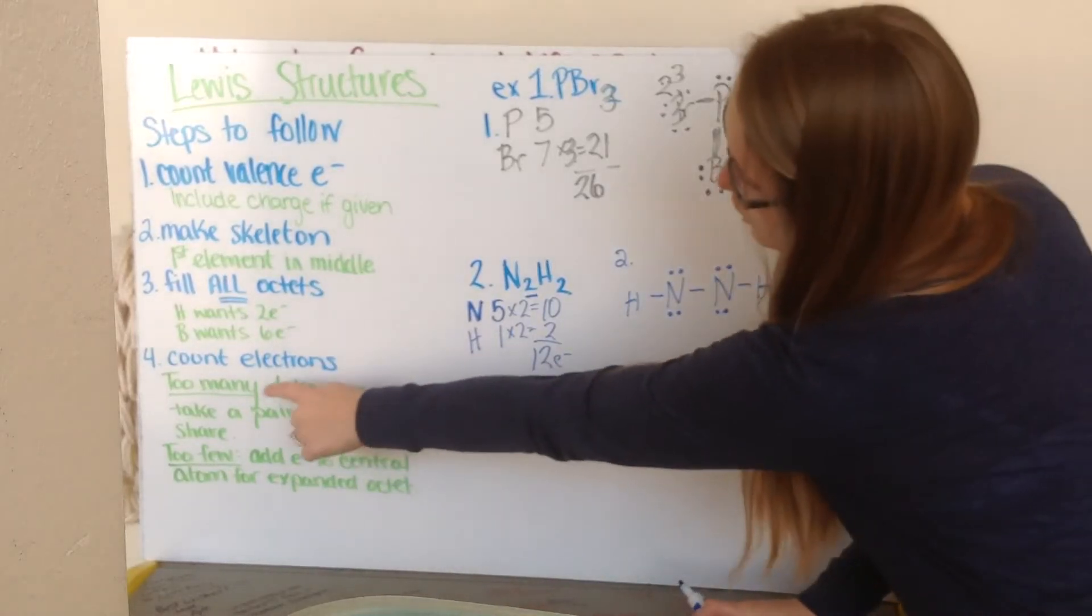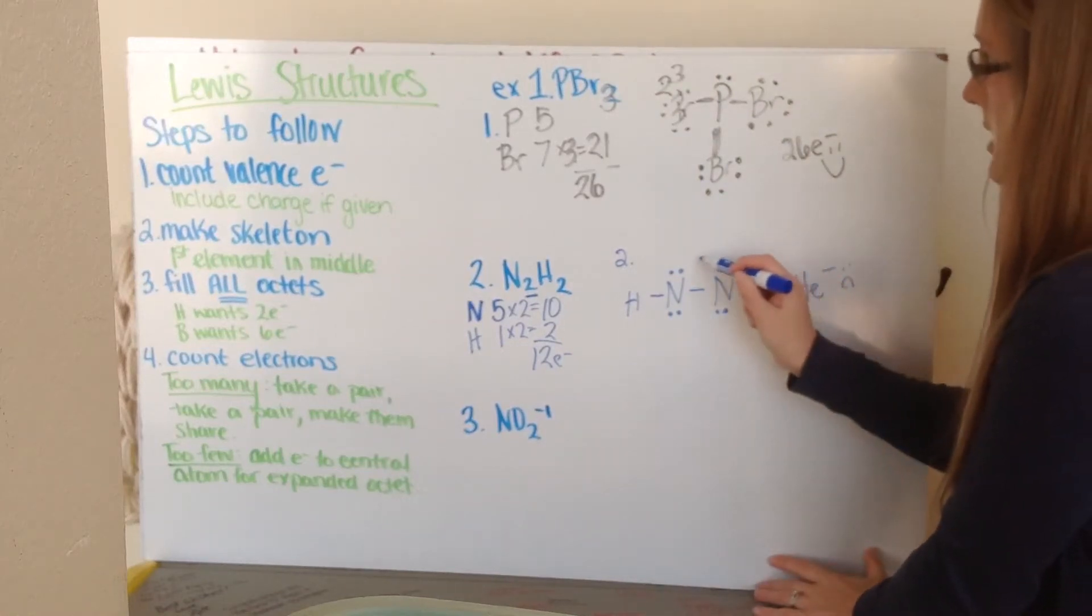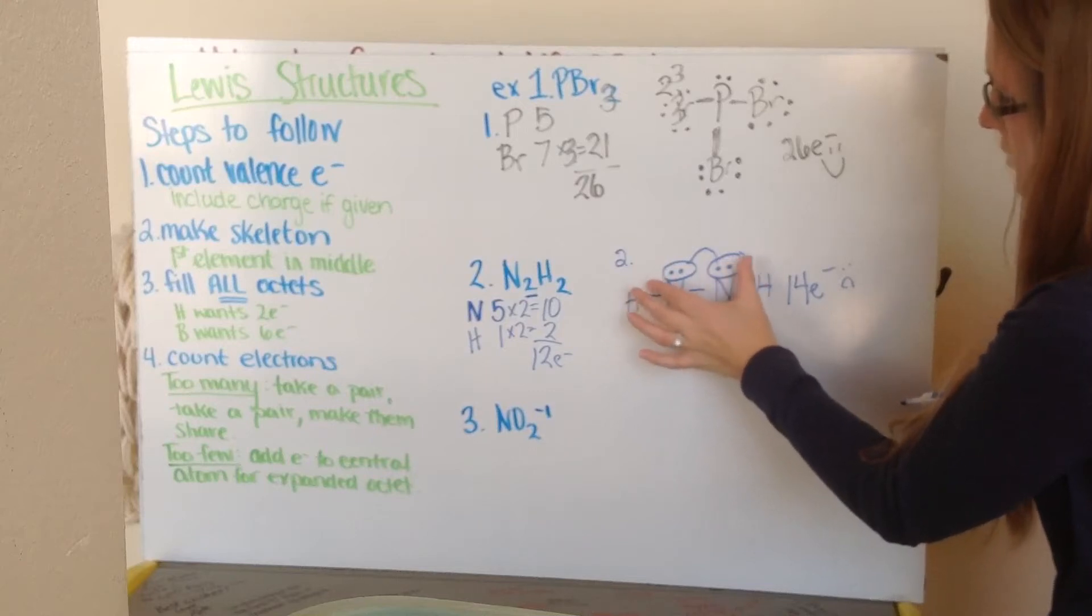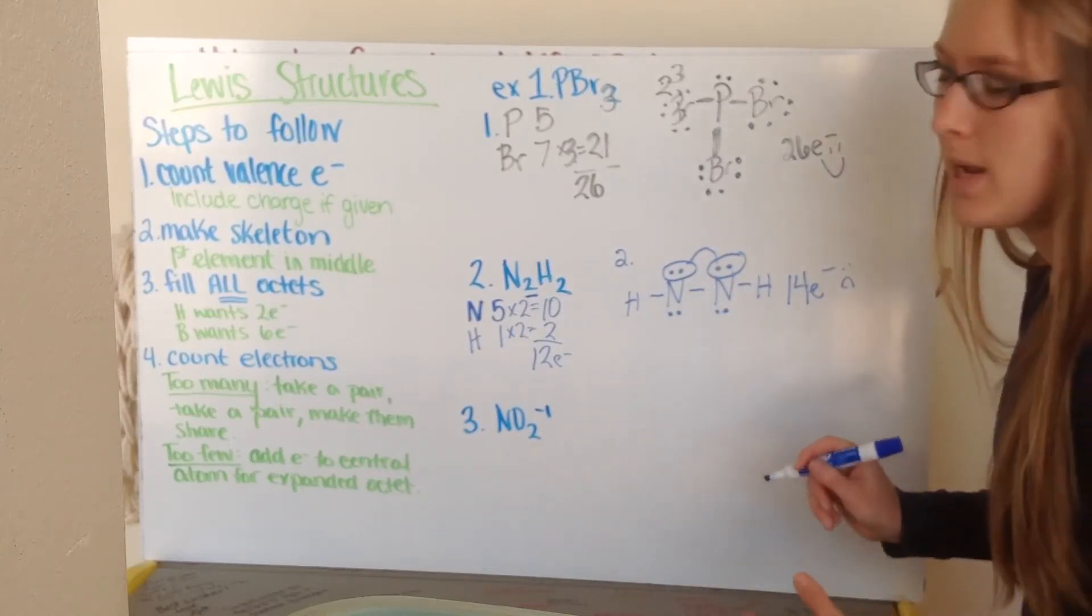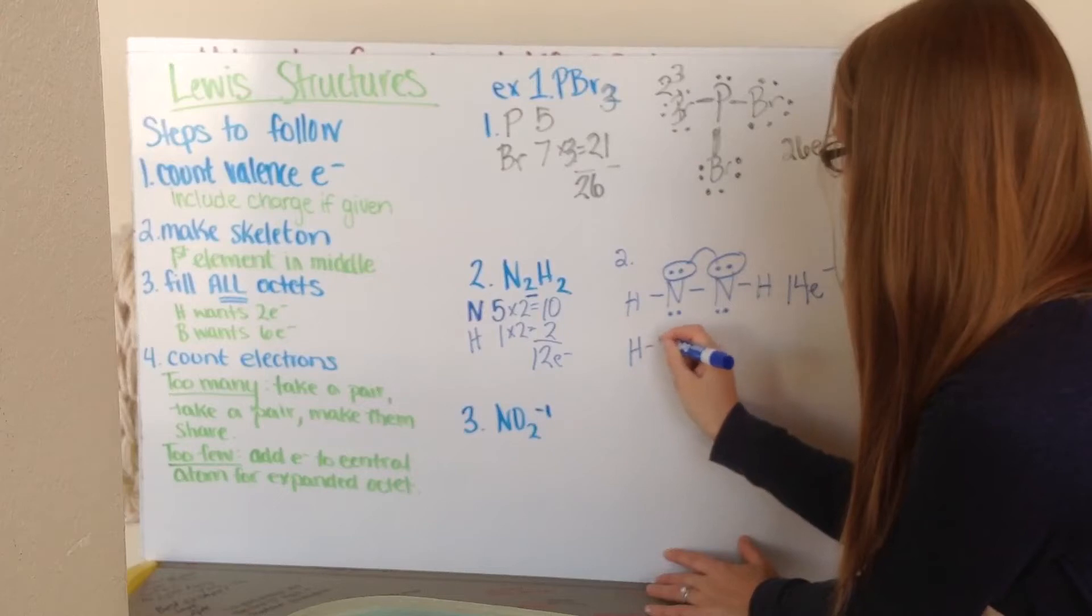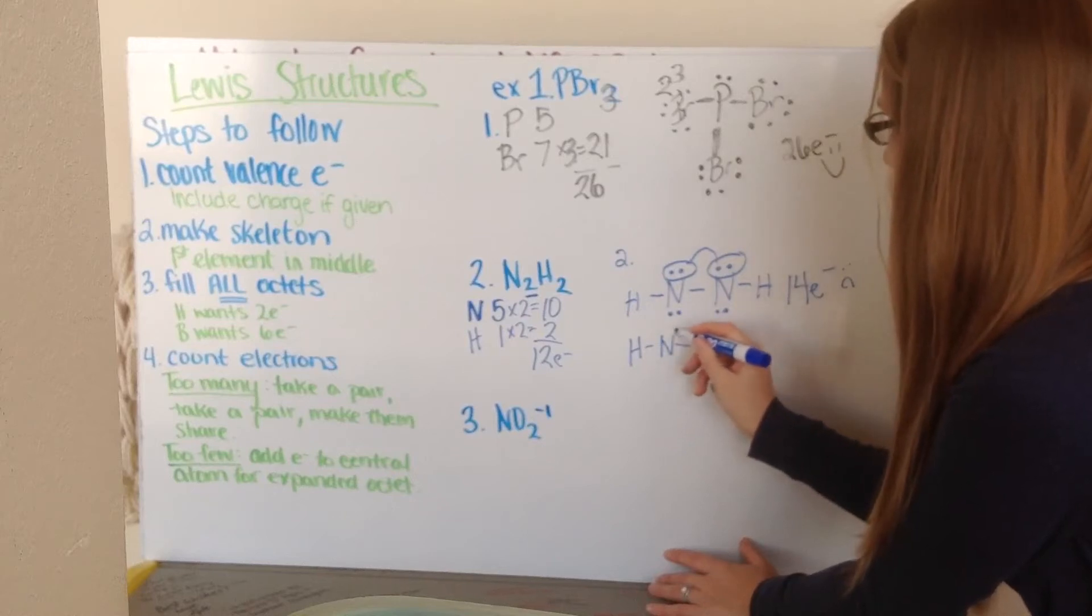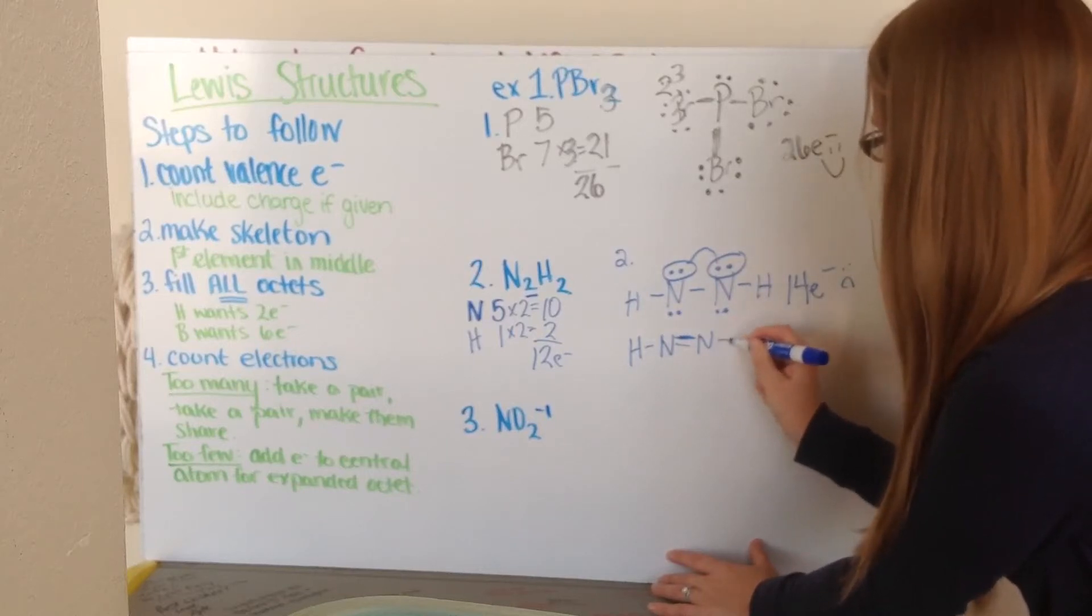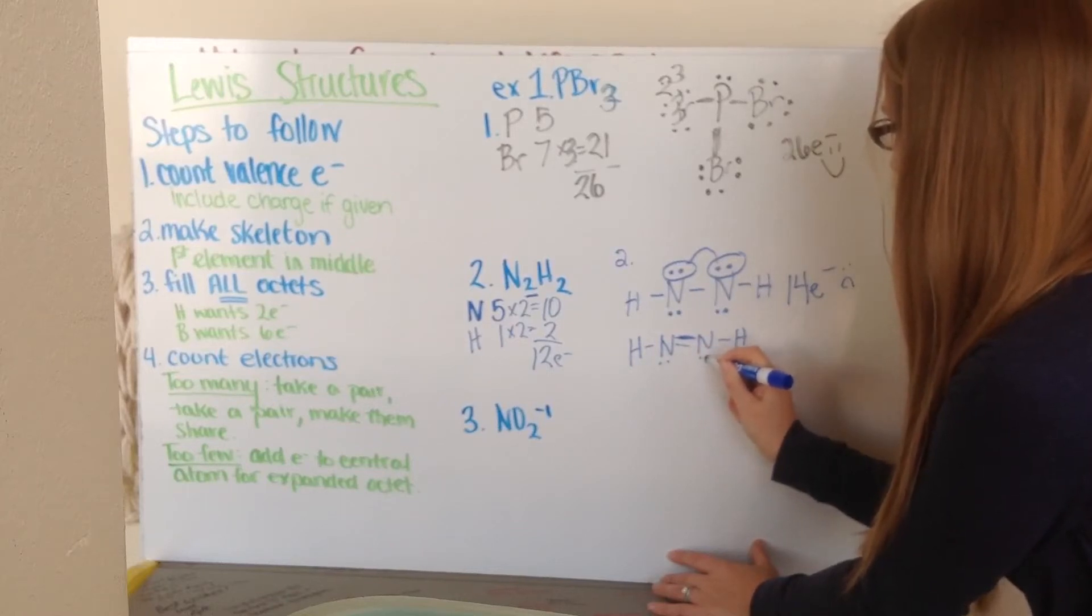So what I do, if I have too many electrons, I take a pair, take a pair, and make them share. So watch as I do this. I take a pair from one atom, I take a pair from another atom, and I make them share. So now instead of having these 4 electrons, I say, I can't have those 4 electrons. I can only have 2, so I make them share 2 electrons. So then I rewrite my atom. I have my hydrogen connected to my nitrogen, and now these 2 nitrogens, instead of having 2 lone pairs on the top, they now have another bond here.